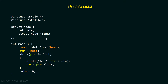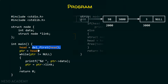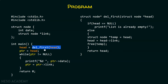Here is a program which helps us in deleting the first node of the list. I am assuming that this list is already available. In the main function, I am not writing the code for creating the list — I am assuming the list is already available. I am just going to call this delFirst function, which is used to delete the first node of the list.